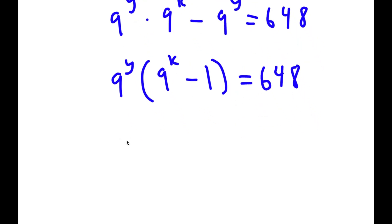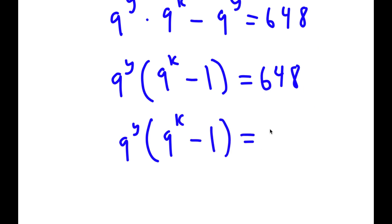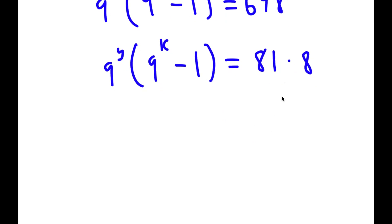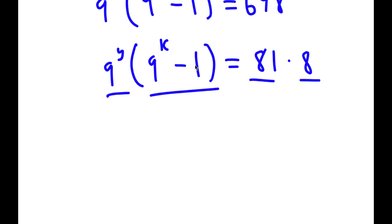Now, 648 is the same thing as 81 times 8. And if you notice, 81 is an odd number and 8 is an even number. So 9 to the power of y is obviously going to be an odd number. So we can say that 9 to the power of y is equal to 81. And 9 to the power of k minus 1 is going to be an even number, because 9 to the power of k is odd, and an odd number minus 1 is even. So we can say that 9 to the power of k minus 1 is 8.